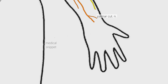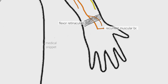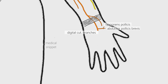The palmar cutaneous branch of the median nerve arises at the distal part of the forearm. It supplies sensory innervation to the thenar eminence of the palm and the central palm. The median nerve enters the hand via the carpal tunnel, deep to the flexor retinaculum. In the hand, it divides into recurrent muscular branch and digital cutaneous branch. The recurrent muscular branch supplies the thenar muscles — namely opponens pollicis, abductor pollicis brevis, and flexor pollicis brevis muscles.